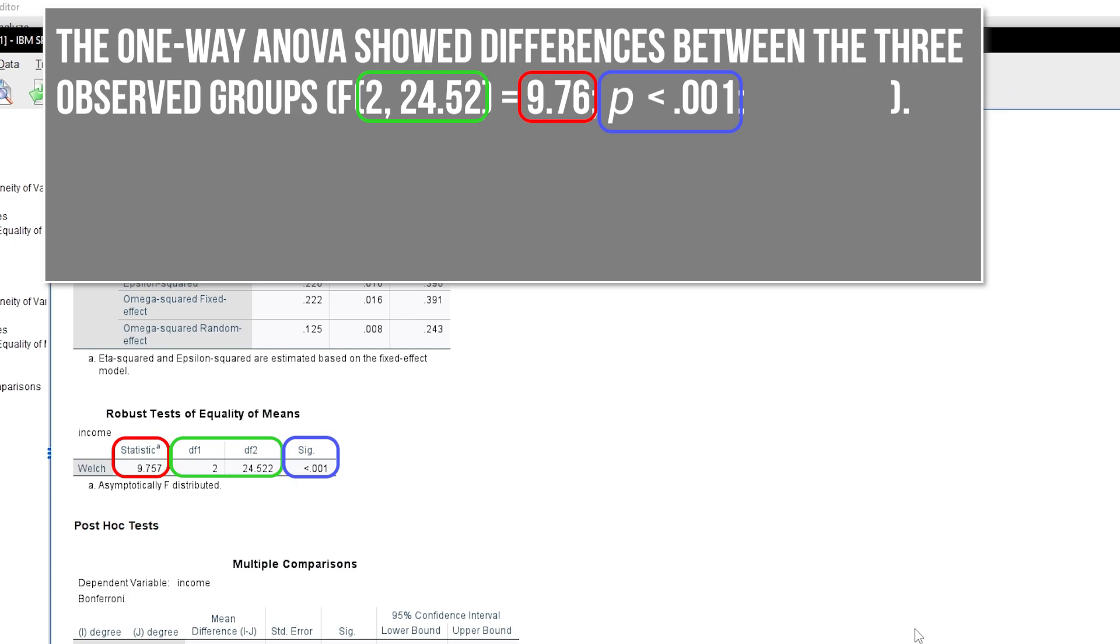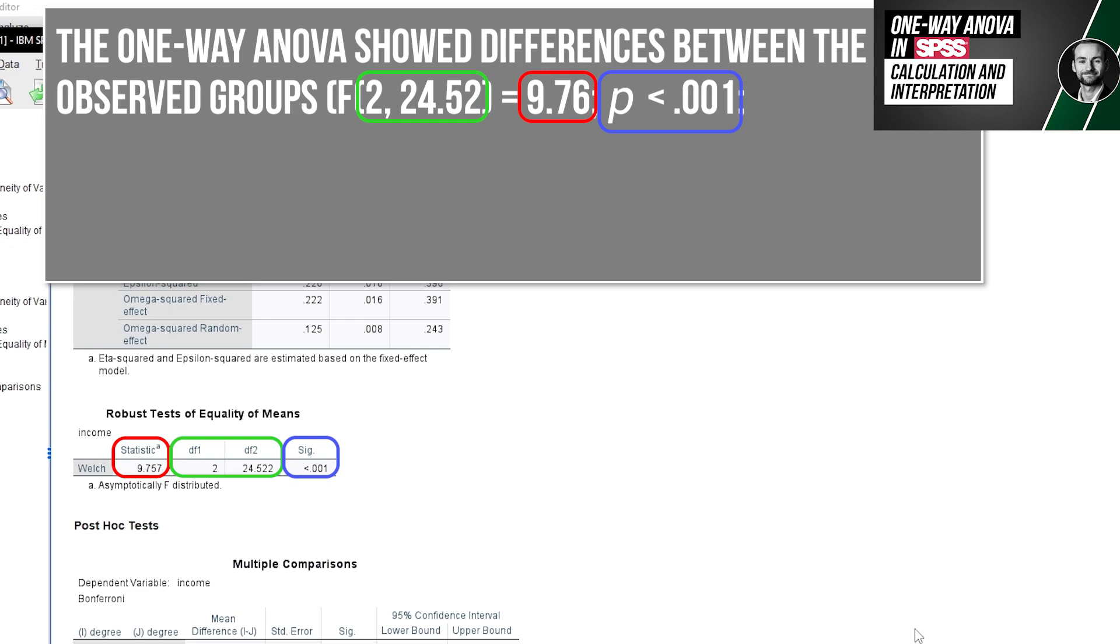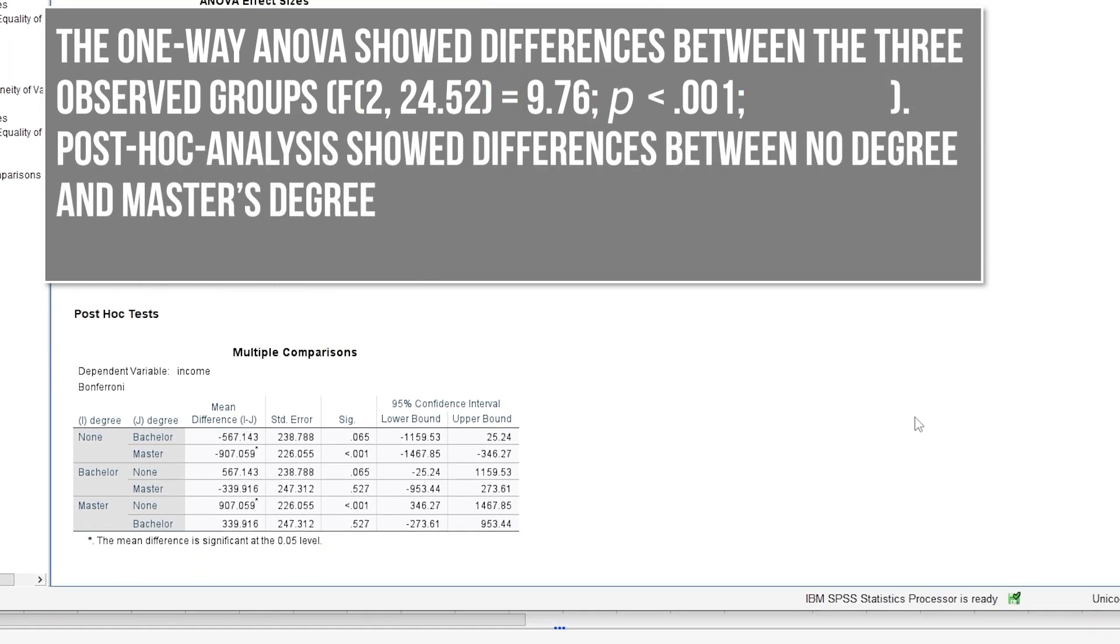I've emphasized why I prefer the robust Welsh ANOVA in the linked video. Therefore, I will report the robust Welsh ANOVA results. In case of calculated post-hoc tests, the observed group differences with a small enough p-value are reported.